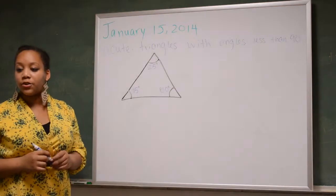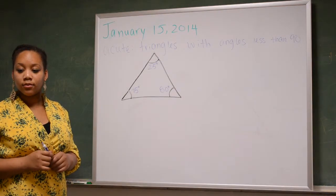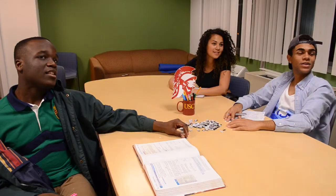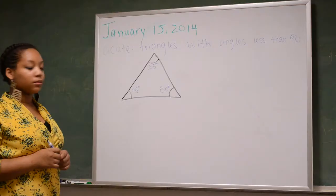Is this triangle an acute triangle? Why or why not? It is. And that's because all angles are below 90 degrees. Good.